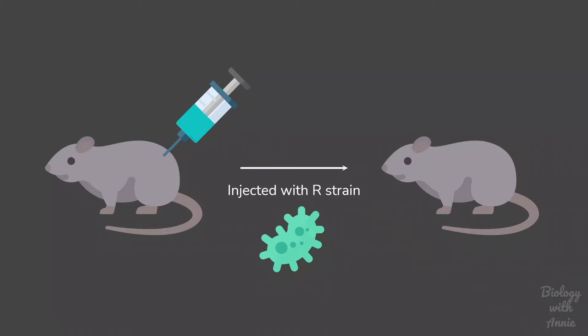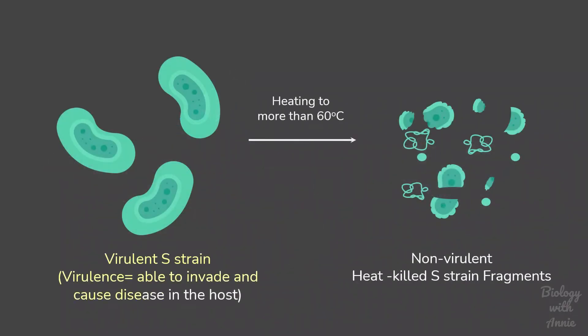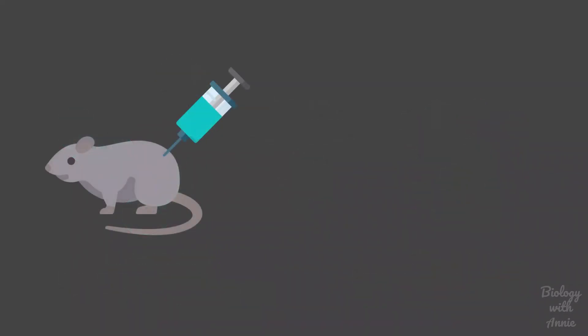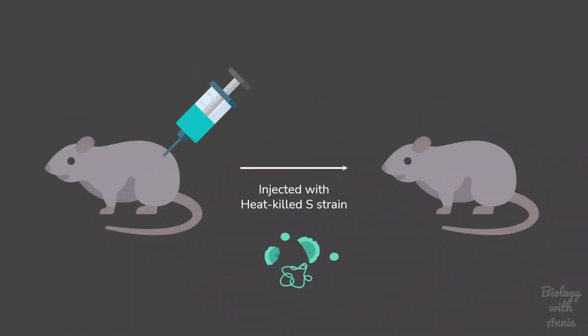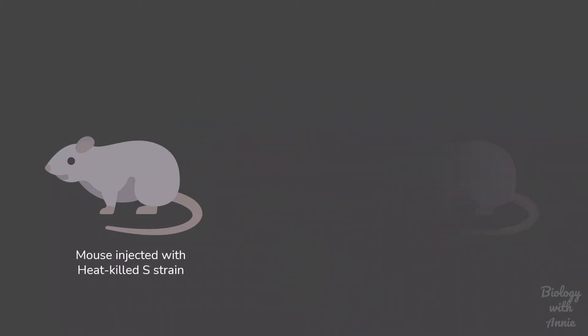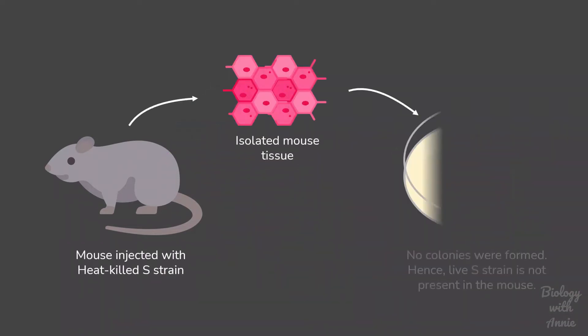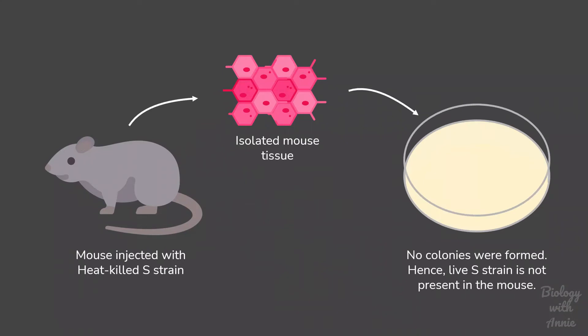The virulence of the S strain — its ability to invade and cause disease in the host — can be destroyed by heating it to high temperature, which kills the bacteria making it non-virulent. When heat-killed S strain was injected into a mouse, the mouse remained healthy and did not develop pneumonia, confirming that the heat-killed bacteria could not revive inside the host. Griffith was conducting these experiments to see if the heat-killed S strain could be used to create a vaccine against pneumonia.